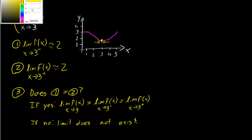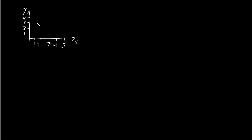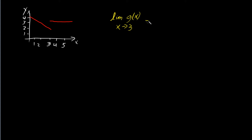Let's do another example where the left and right limits are not equal. Let's imagine we have a function g of x that goes through the y-axis at 4, drops down until it reaches x equals 3, then jumps back up and continues horizontally. Let's find what is the limit of g of x as x approaches 3. First step: what is the limit of g of x as x approaches 3 from the left?